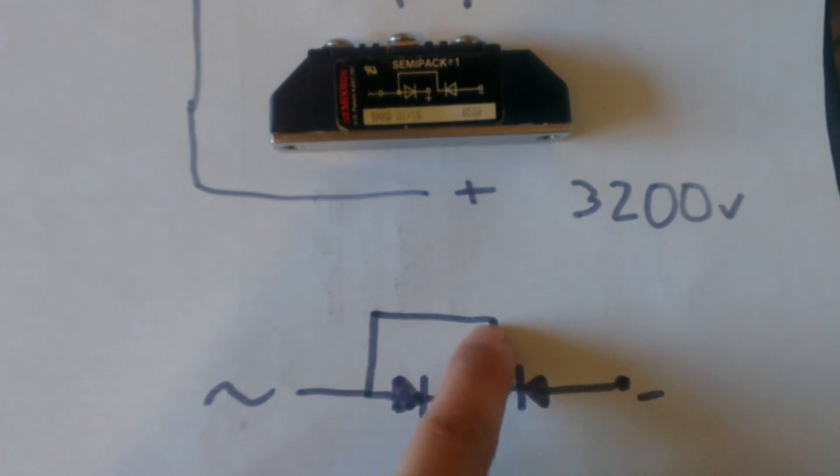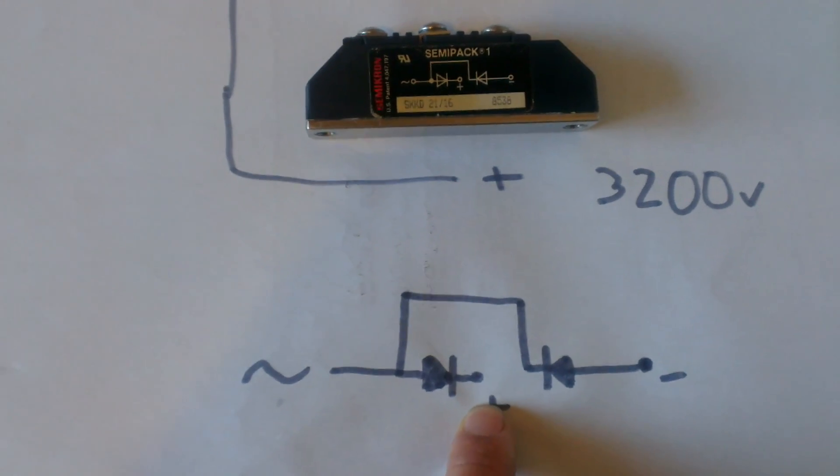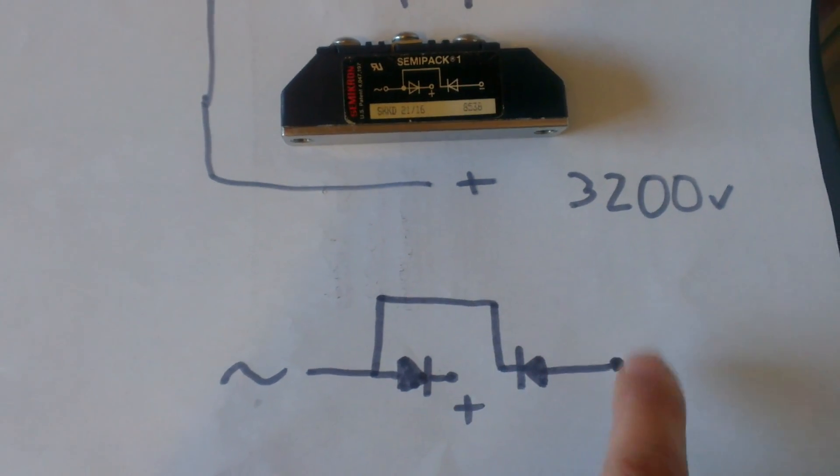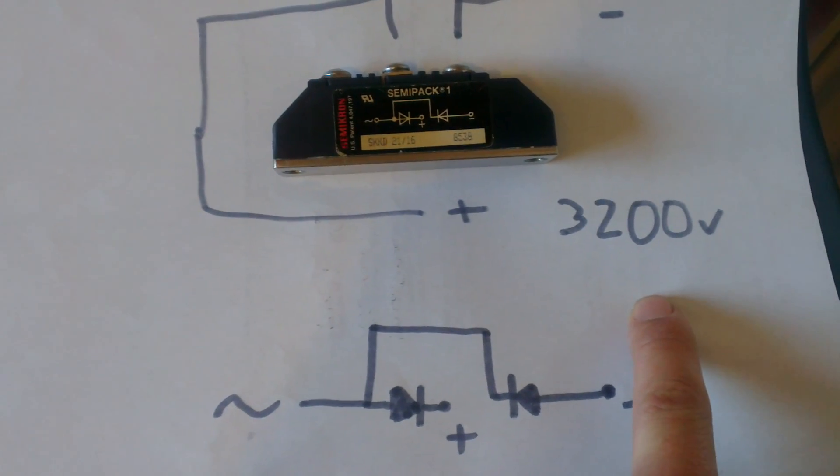and went in here, it would go through there, skip out this pin, and out here. Would that give me a diode that can handle 3200 volts?